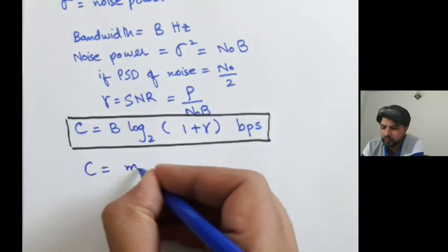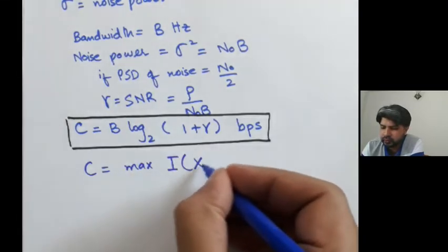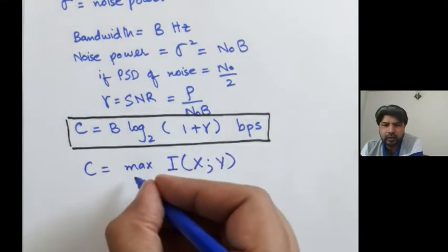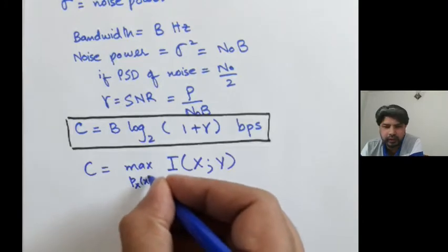This maximization would occur over distribution of X. And he proved that this I of X, Y.